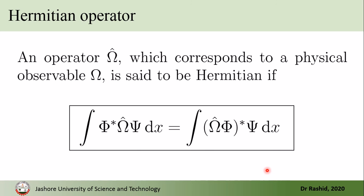Now let's come to Hermiticity. An operator omega-hat is said to be Hermitian if it follows this equation: it can be moved from the second function to the first one in a specific way. When it was acting on psi and is taken to act on phi, the complex conjugate of the result is taken. If an operator follows this equation, we say that operator is Hermitian.